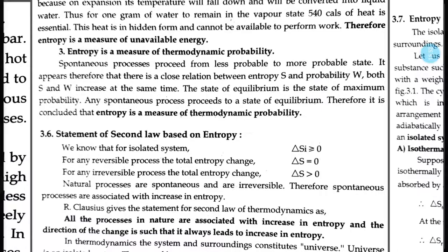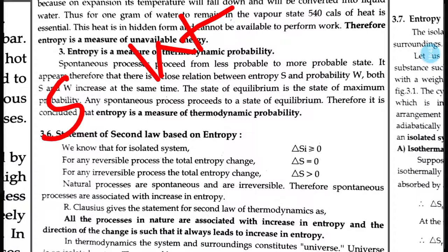It appears that there is a close relation between the entropy S and the thermodynamic probability W. Both S and W increase at the same time. Any spontaneous process proceeds from a less probable state to a more probable state, and it proceeds to a state of equilibrium. The entropy is at its maximum in the most probable state. Therefore, entropy is a measure of thermodynamic probability.